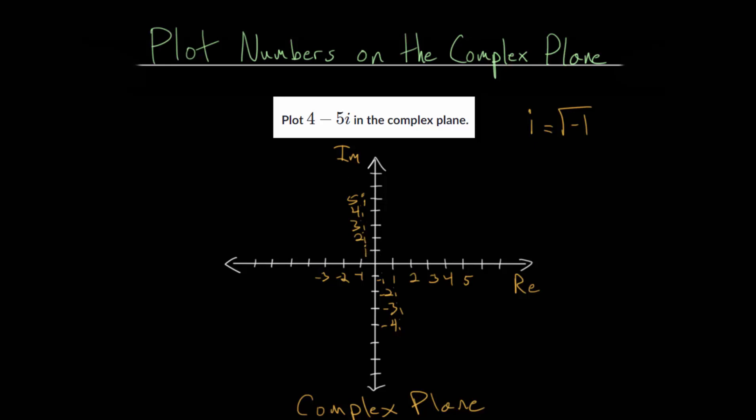For example, let's say we have the number 2 plus 3i. The way to plot this point is to first move to the number 2 on your real axis, so right here, and then go up or down depending on the sign here,